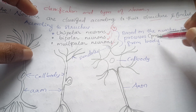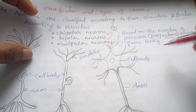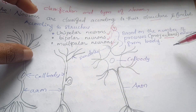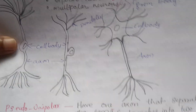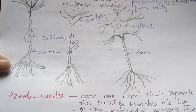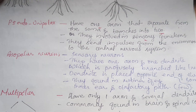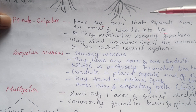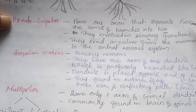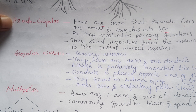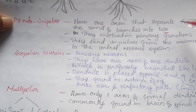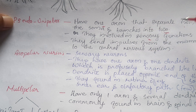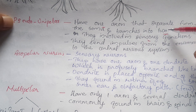We classify neurons by their projection and cell body. For the Unipolar Neuron, there is one axon that separates from the soma and branches into two branches on two sides.